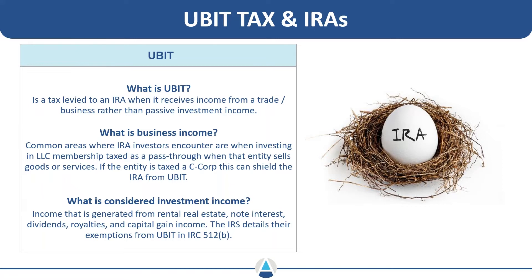Another question: my LLC receives rental income only — no employees — but I do pay lawn maintenance and repair people. I think you're fine on that. If your IRA owns a wholly-owned LLC that just owns rental real estate and you're paying for basic maintenance and upkeep, I don't see that as a problem. It's really no different than an IRA owning the property directly. You're not operating a business — you're just maintaining the asset.